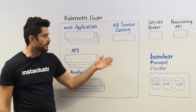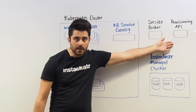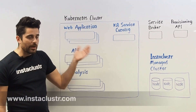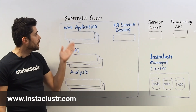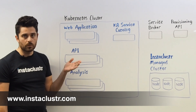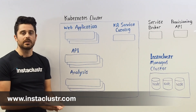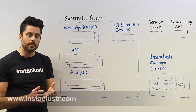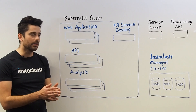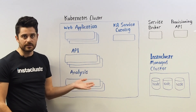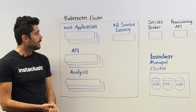That would be a manual process. We provide provisioning APIs and our website which will give you the connection information that these applications would require to connect. But we don't want to do that manually — we want it to be an automated seamless thing to take advantage of the Kubernetes environment as it is. So how do we go about doing that?